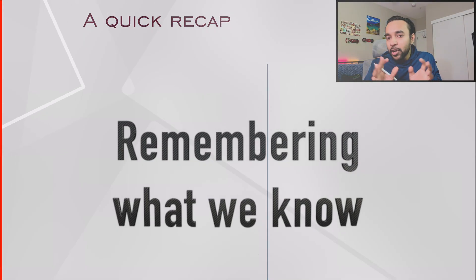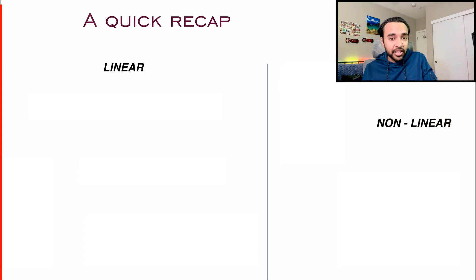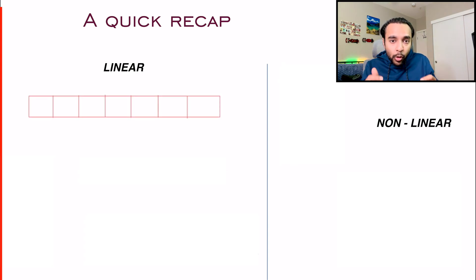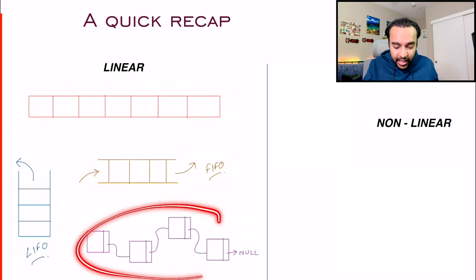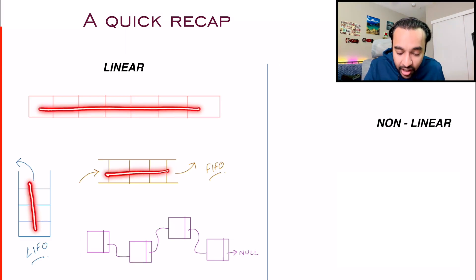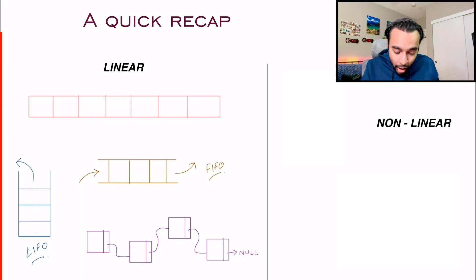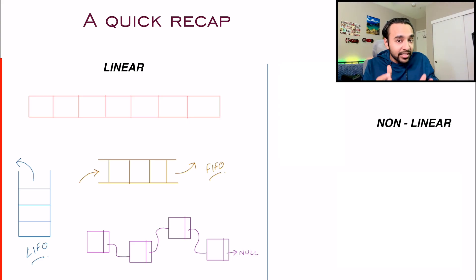Let us do a quick recap on some of the basic data structures that we already know about. Data structures can be divided into two parts: linear data structures and nonlinear data structures. Among the linear structures, you already know about arrays, stacks, queues, and linked lists. In all of these structures, the elements are arranged in a linear fashion. Even in a linked list, although the nodes can be anywhere in memory, when you are traversing them, you always go in a linear fashion — one after the other.